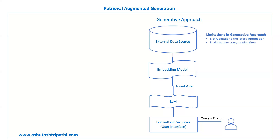If the information is lacking, you might try to retrain the model. But LLMs are trained on billions of parameters — that training takes a lot of time and consumes a lot of resources. Not everyone has those resources available. So this is another major limitation: retraining takes a lot of time.